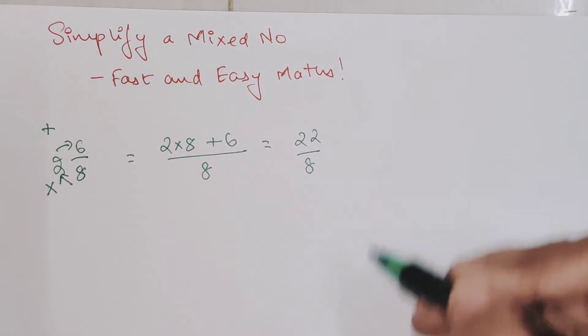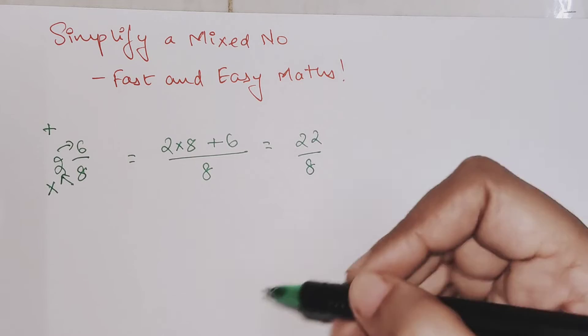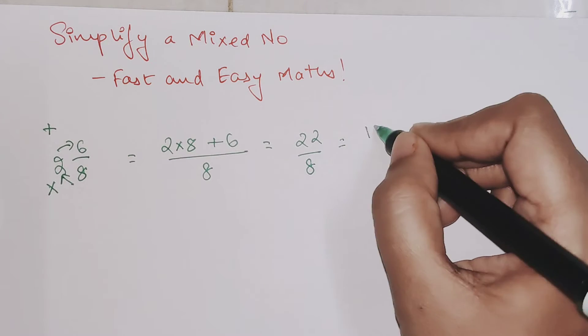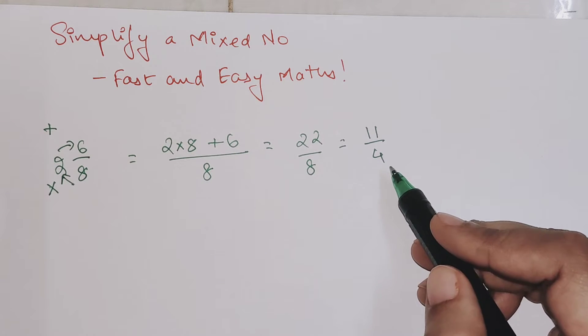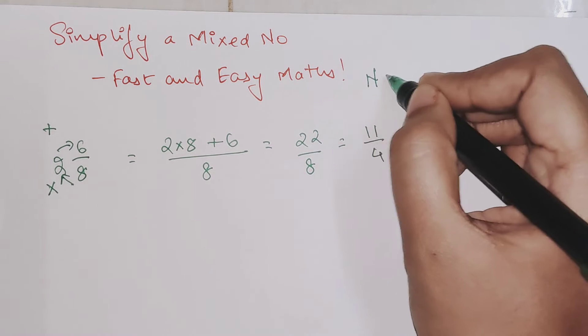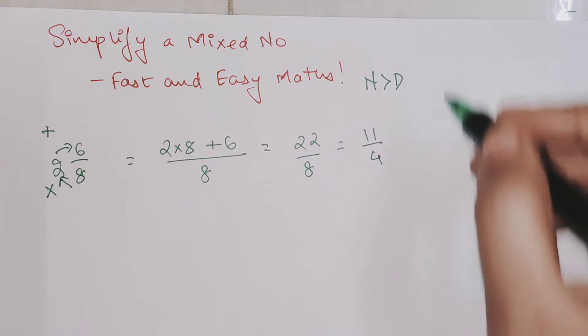Both of them are even numbers, so this can be reduced further. We will get 11/4. Now again, this is an improper fraction because the numerator is greater than the denominator.